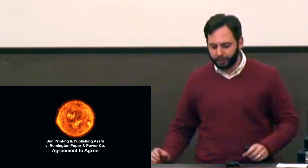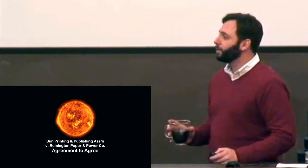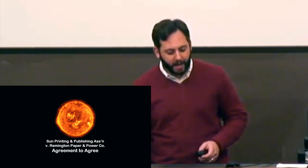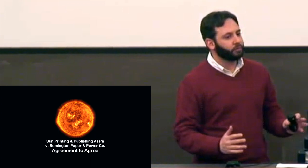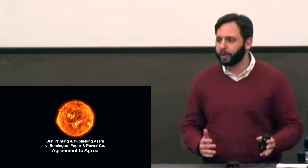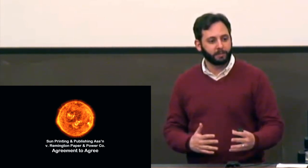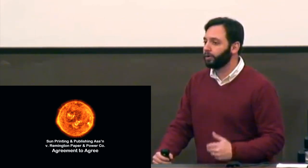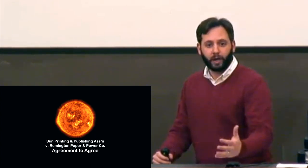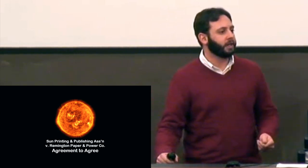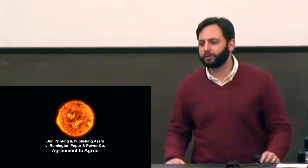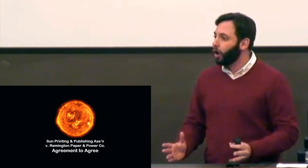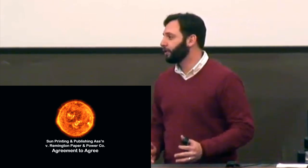Something similar, though slightly different, appears in the case of Sun Printing, where the court found what they called an 'agreement to agree' and did not find an enforceable contract. There was a contract with an initial performance period, but the price was not set for the period afterward. The dissent noted the price could be calculated based on a formula or at least had a minimum creating a type of option, but the majority said because there was no price term for the period after the preliminary period, there was no contract for that period. Price is usually an essential term.